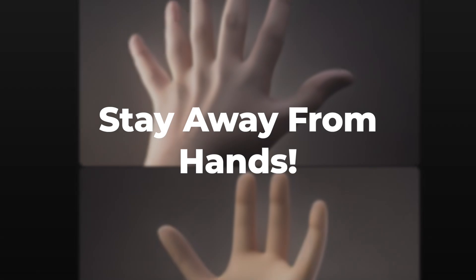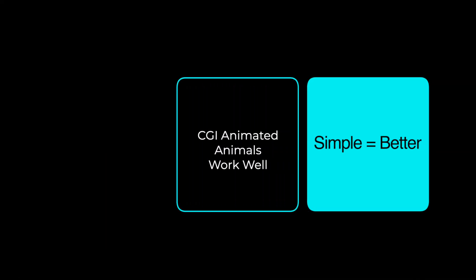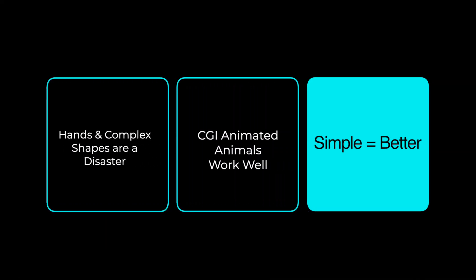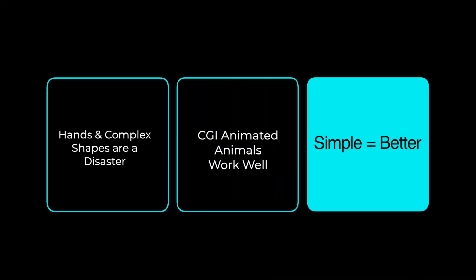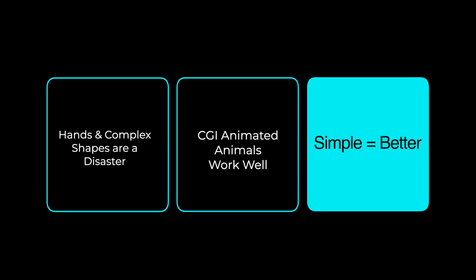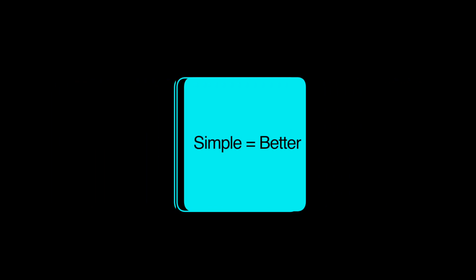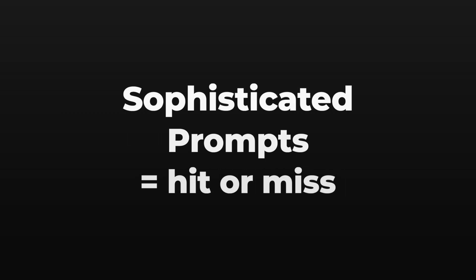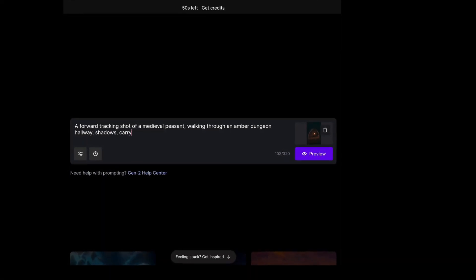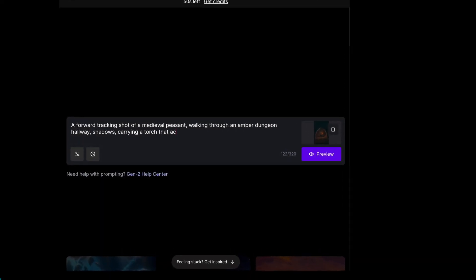Quick recap: simple shapes and prompts are better, CGI animated animals work well, hands and complex physical shapes are usually a disaster. You can also do more complex prompts — I'll walk you through that, but you're going to see where it goes wrong.